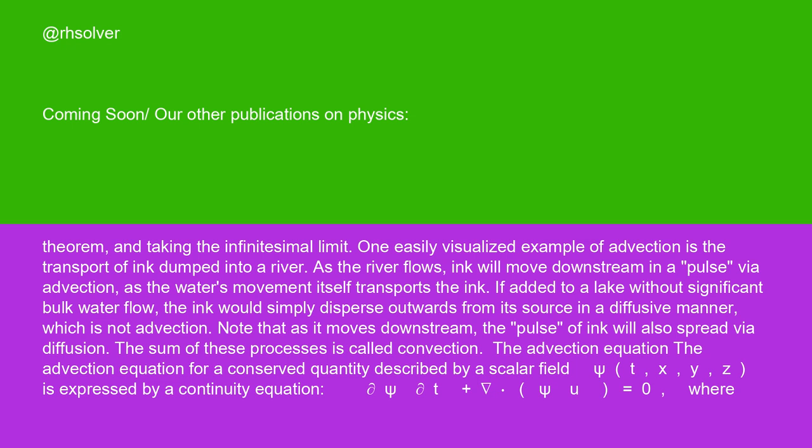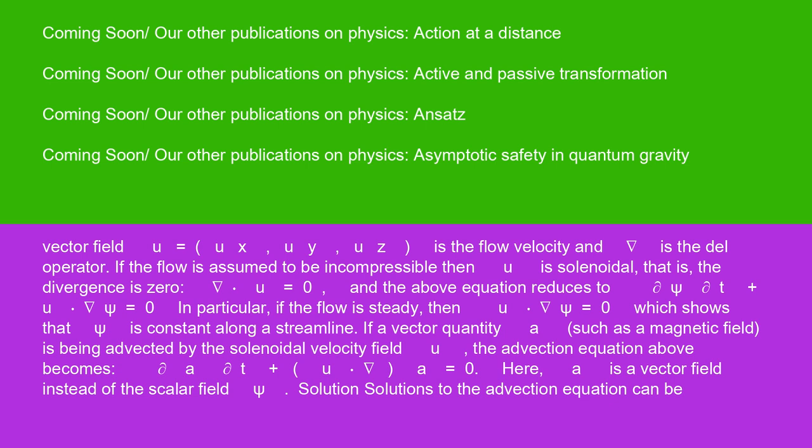The advection equation for a conserved quantity described by a scalar field ψ(t, x, y, z) is expressed by a continuity equation: ∂ψ/∂t + ∇·(ψu) = 0, where vector field u = (ux, uy, uz) is the flow velocity and ∇ is the del operator.